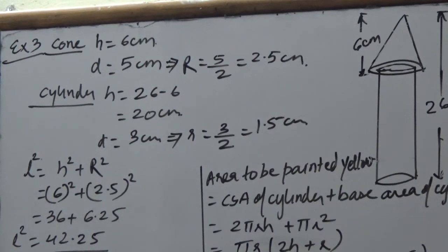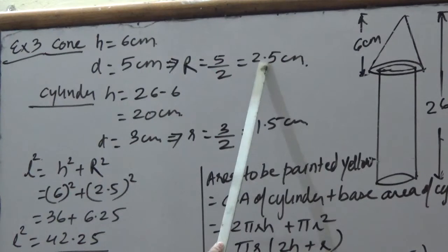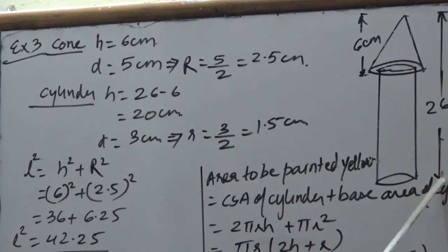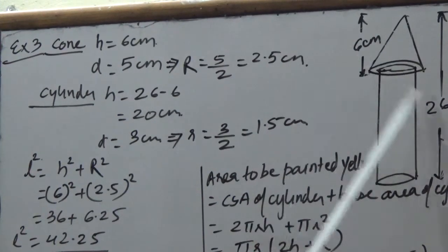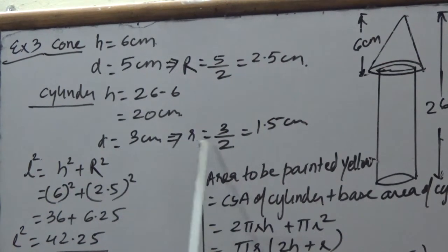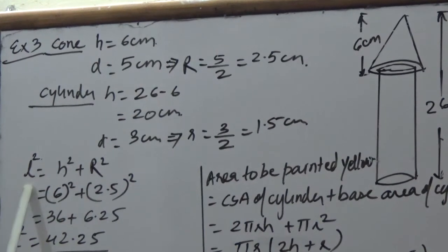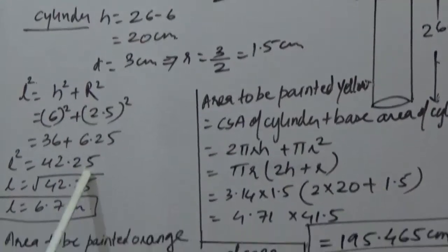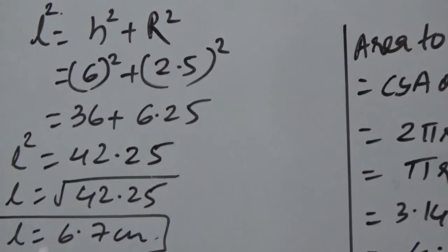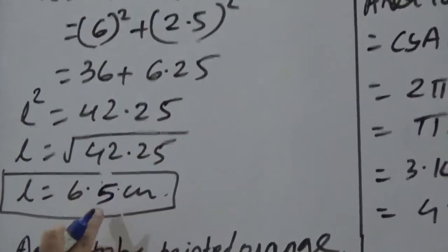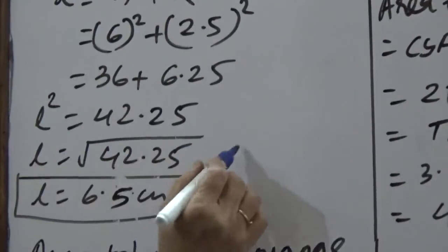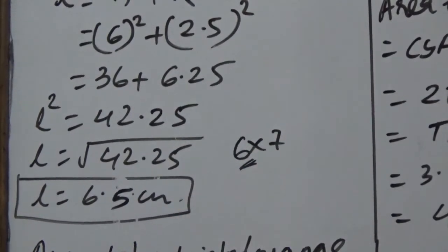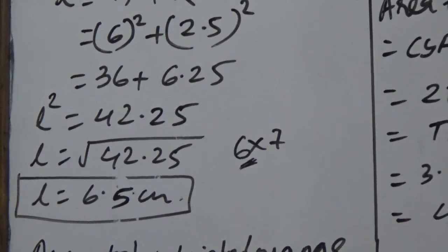The height of the cylinder = 26 − 6 = 20 cm. For the cone, L² = H² + R² = 6² + 2.5² = 36 + 6.25 = 42.25. Using the short trick: 5² = 25, and 6×7 = 42, take the smaller number 6. So the square root gives L = 6.5 cm.